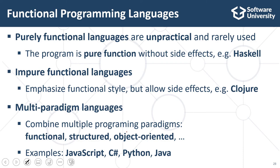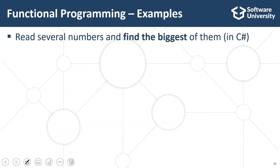This is an example which demonstrates the functional style of programming compared to the traditional imperative or structured programming style. We want to write a C-sharp program to read several numbers, find the biggest among them, and print it. To solve this problem in a functional style, we can write the following code.